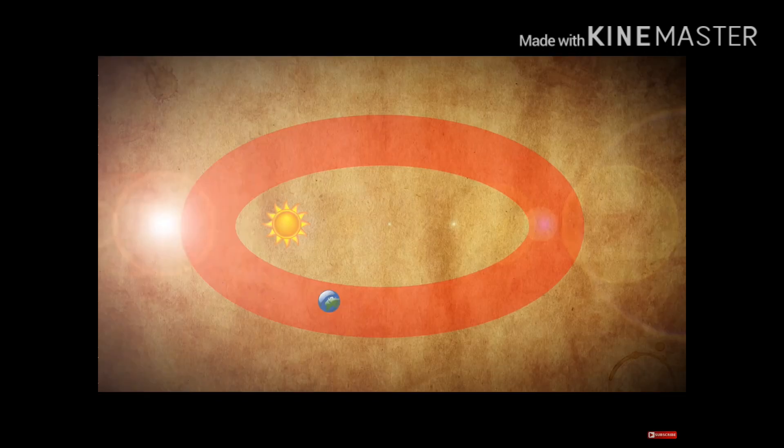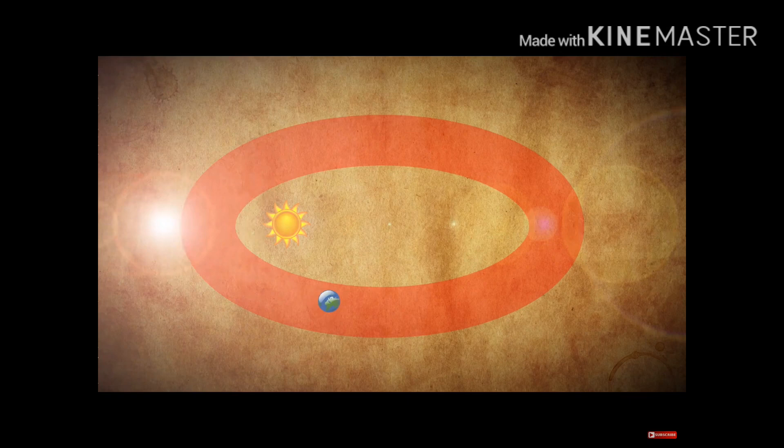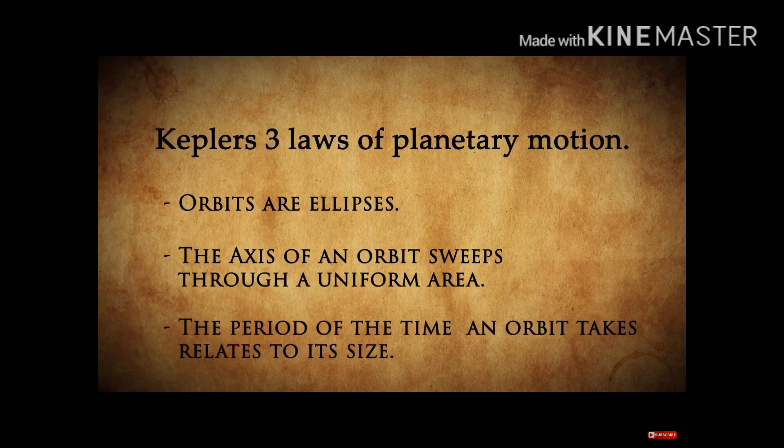But when Kepler started analyzing this data, he found that planets are not in circular orbits but they were in elliptical orbits with the sun at one of the focal points or one of the foci.